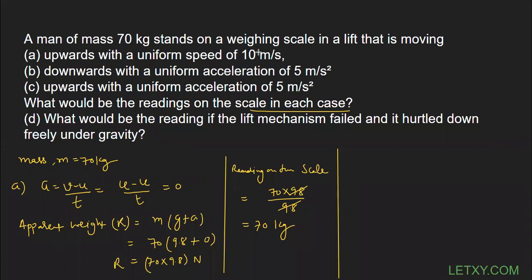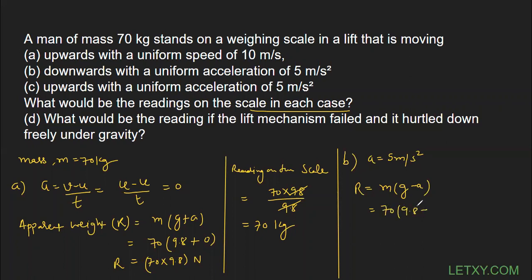For part B, the lift is moving downward with a uniform acceleration of 5 m/s². The acceleration value is 5 m/s². Since the lift is moving downward, we use the formula R = m(g − a). Here m = 70, g = 9.8, and a = 5, so R = 70 × (9.8 − 5) = 70 × 4.8 N.